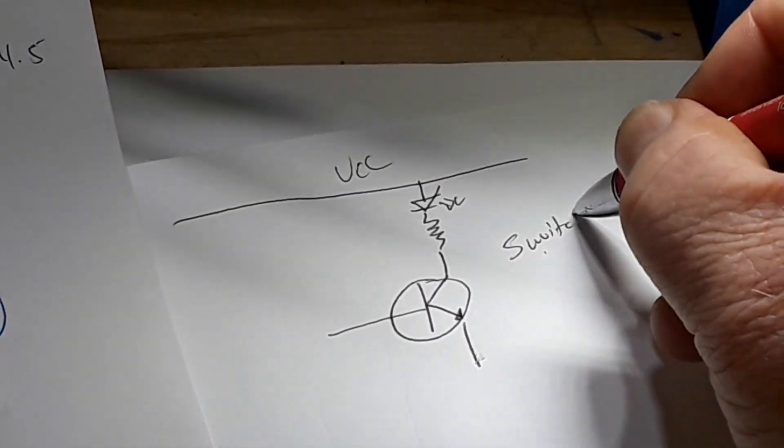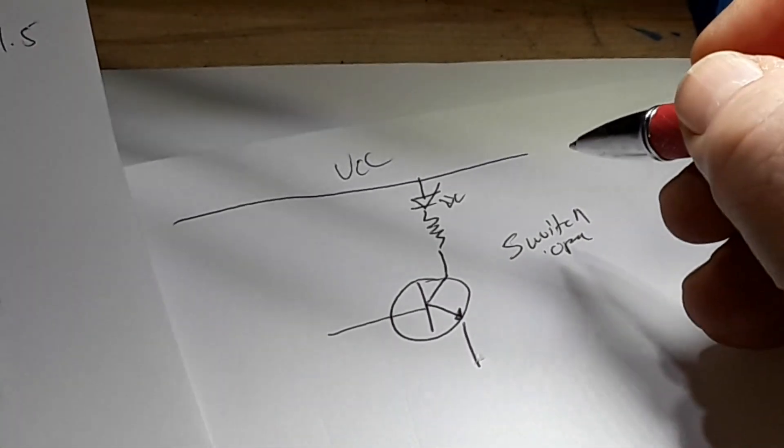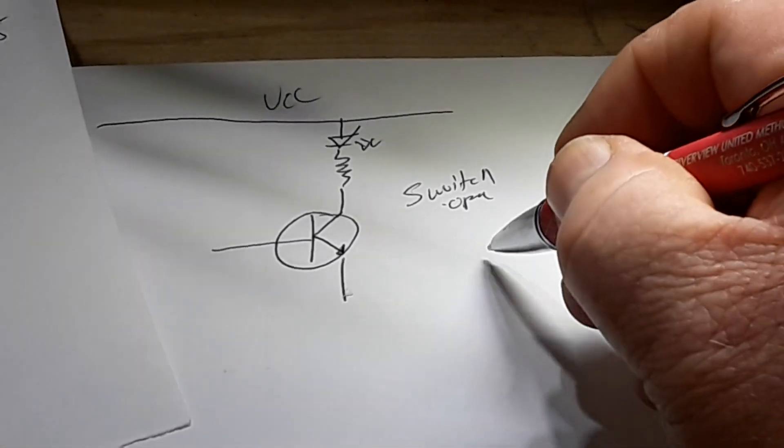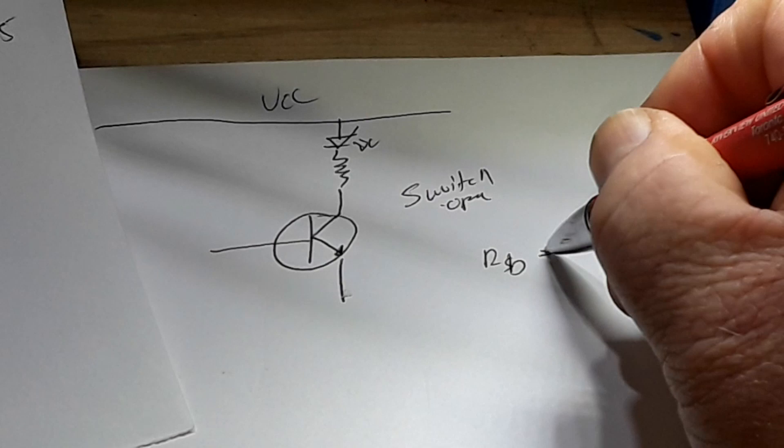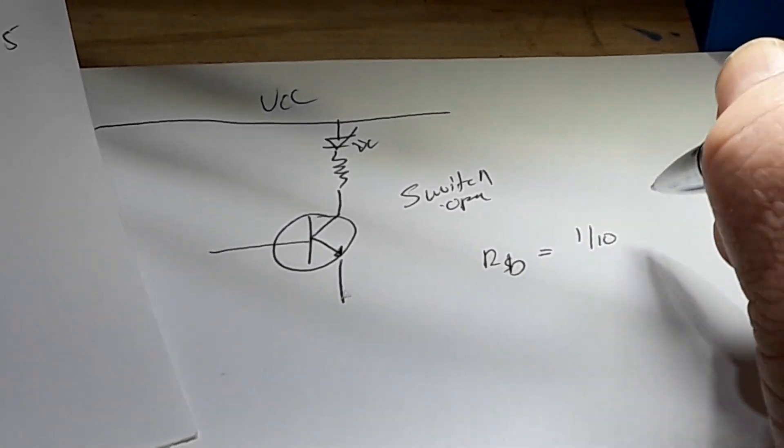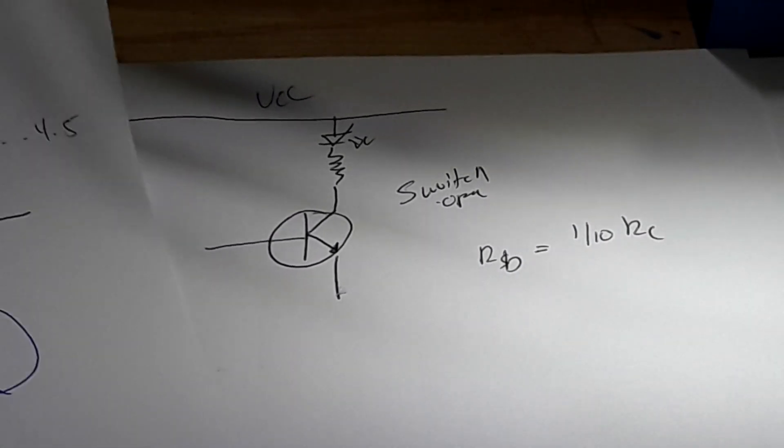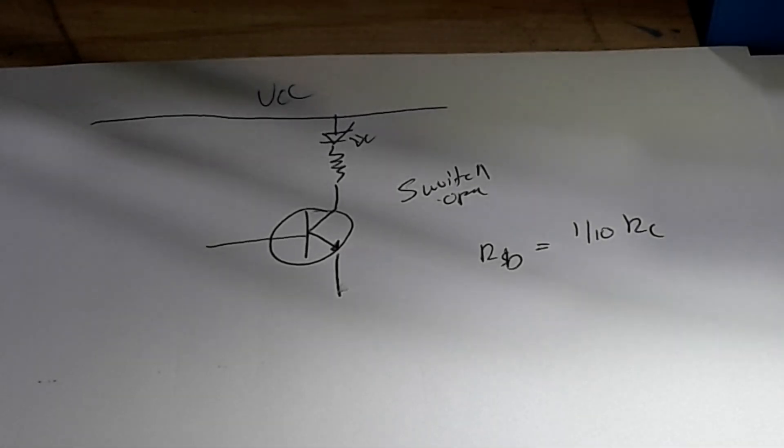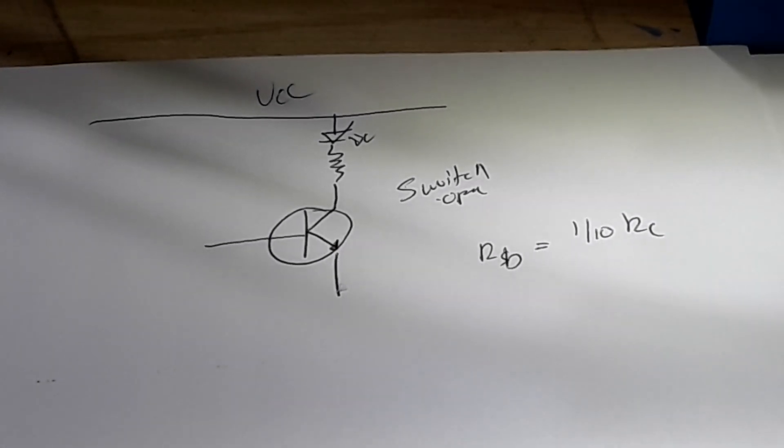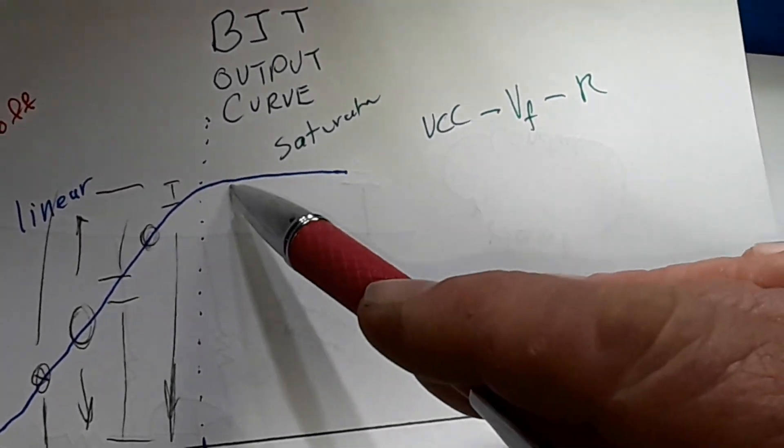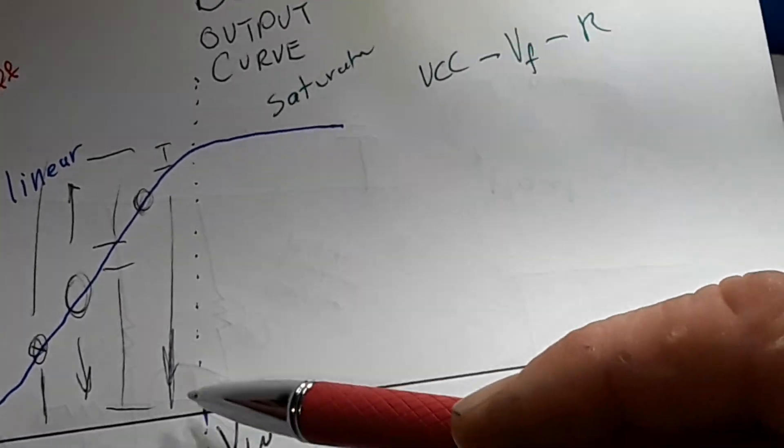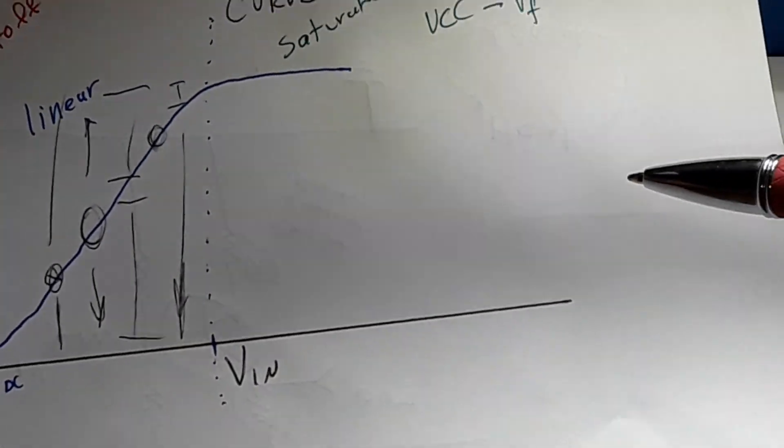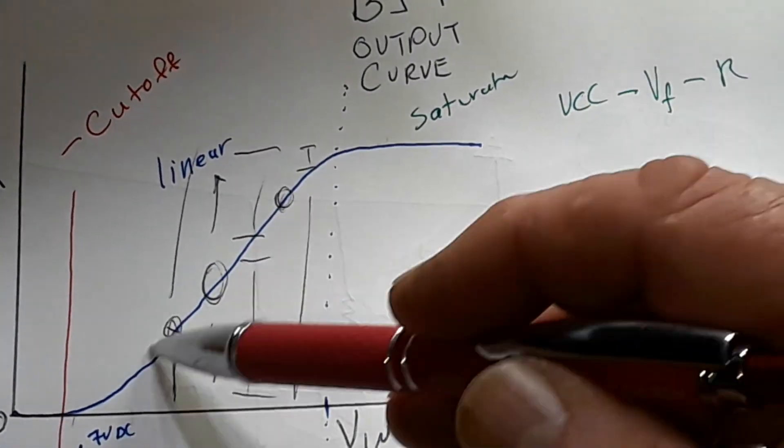So in a switch operation, you kind of want to set R5, which is your base, we'll call it RB, equal to one-tenth RC. And what that will do, generally in most situations, is send your transistor into the saturation range.